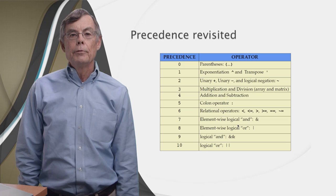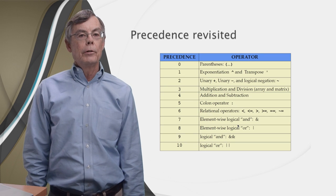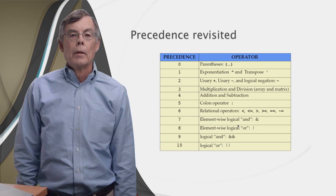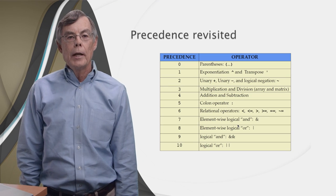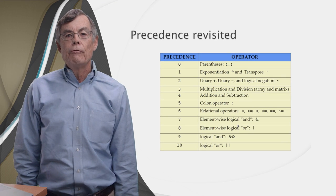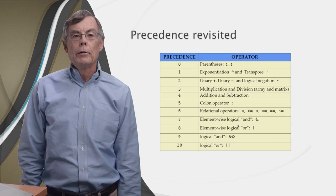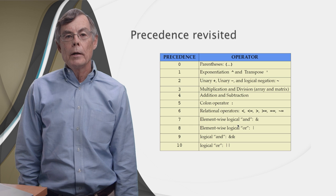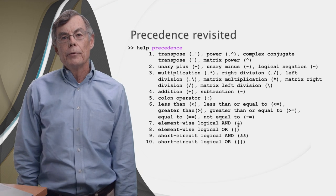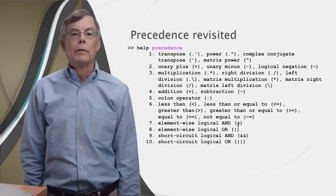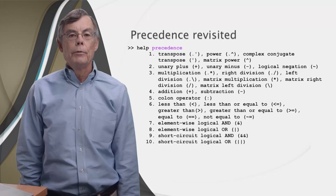Now that we've seen relational and logical operators, it's time to revisit operator precedence - the rules governing the order in which operations are executed. In this precedence table, lower numbers mean earlier execution. Relational operators at level 6 are executed before logical operators at levels 7, 8, 9, and 10. Addition at 4 is executed before the colon operator at 5. You can get this table anytime with the command 'help precedence'. When you're not sure about precedence, use parentheses to force the order you want - it also improves readability.